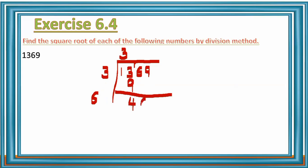Bring down the next two digits: 469. Double the divisor gives 6; write 6 and leave a blank to its right. We need a digit such that 6_× that digit does not exceed 469. The unit digit of 469 is 9, so try 3: 63 × 3 = 189, which is less than 469.